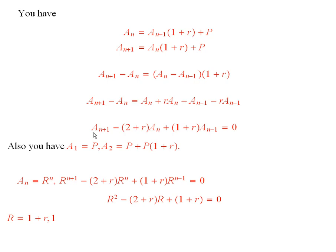So let's begin with the recurrence relation. A sub n is equal to some r to the n. And if I plug that in, I get r to the n plus 1 minus this plus that equals 0. Now divide throughout by r to the n minus 1, and you get this quadratic equation here.